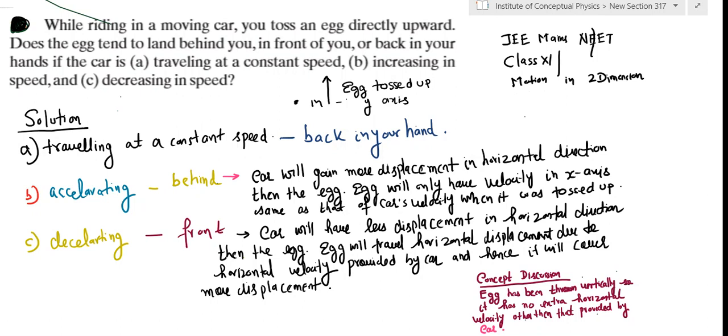But what is important is if you see the question, the egg has been tossed up directly upwards, which means the initial velocity of the egg is in the y-axis. And when the egg leaves the hand, it also has an additional component which is provided by the car.